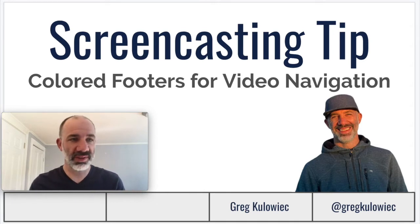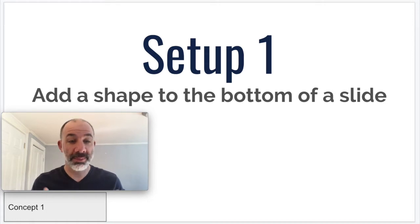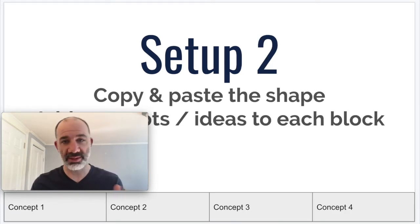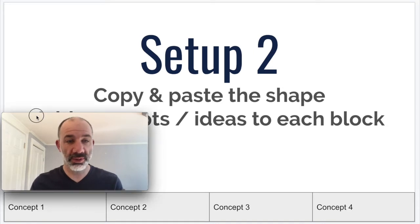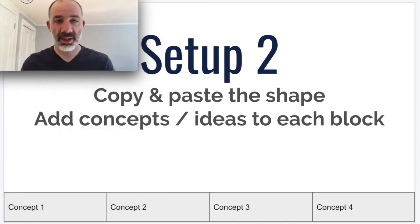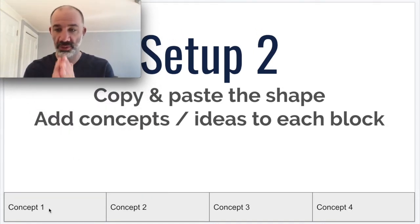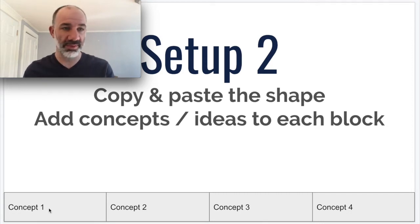I'm just in a set of Google Slides, and in my setup process you can see right here I'm adding a little block down to the bottom of the slides, and that block represents concept one. Then what I'll do is copy and paste that block so it's the same visual across the bottom of the slides.